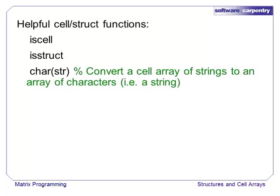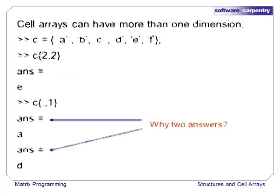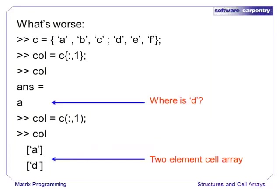Earlier, we noted that an array of characters is just a string. Cell arrays can have more than one dimension, just like regular arrays. Indexing shortcuts appear to work as expected, but note the slight difference in the output. Also, if we assign a set of cell array contents to a variable, we only get the first variable in the index. This is MATLAB's best guess as to what we want, because we are asking MATLAB to assign the value in each cell to the variable. If we really meant to get a column of cells, then we need to use cell indexing instead of content indexing.